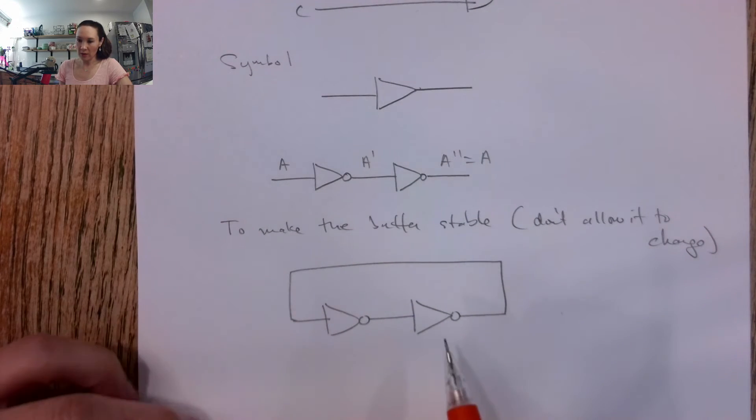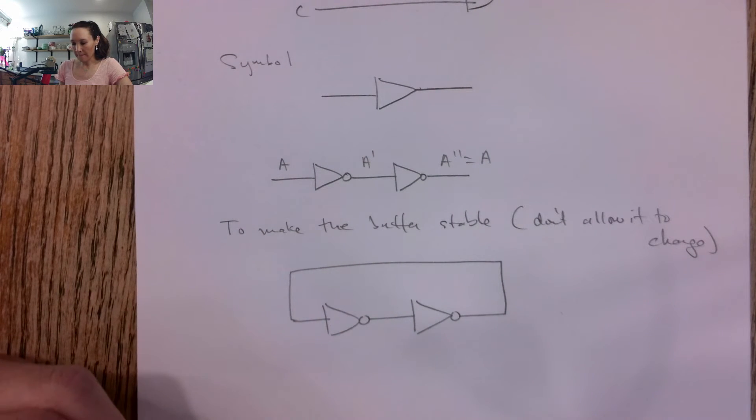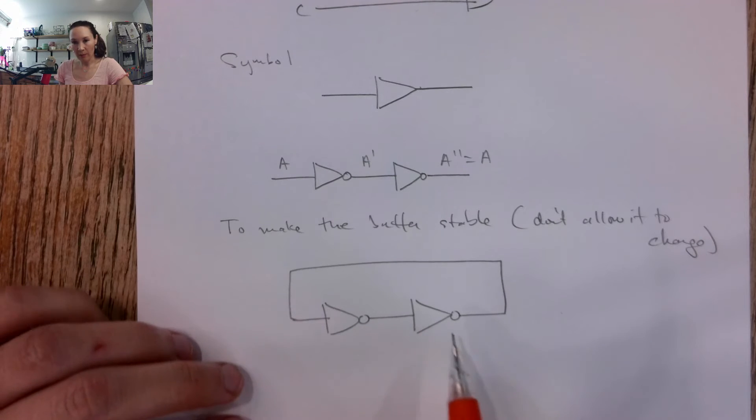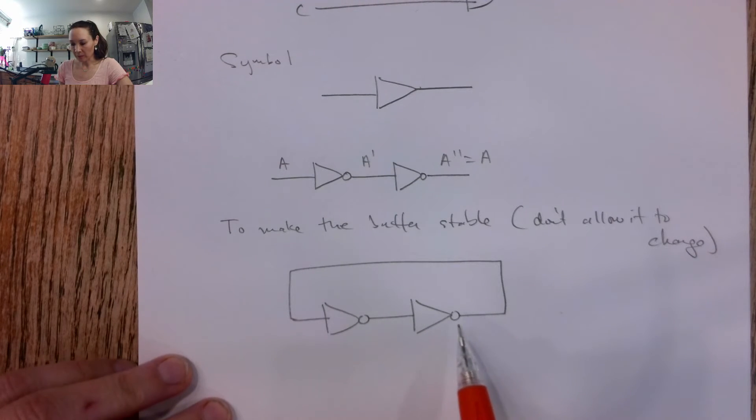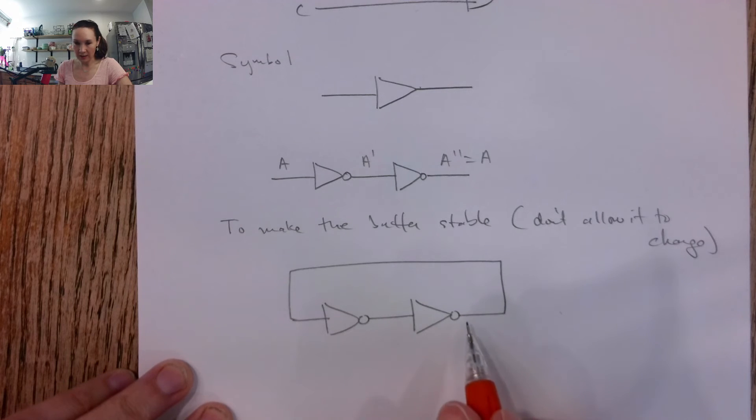And the question now is, how can we create a memory device that can store either a 0 or a 1? So in a buffer like this, it's hard for this to change because it's stable, so whatever is on it is just going to stay on it because we have this feedback loop.